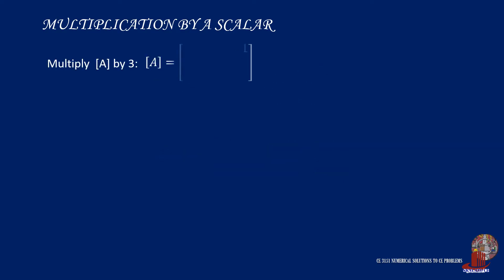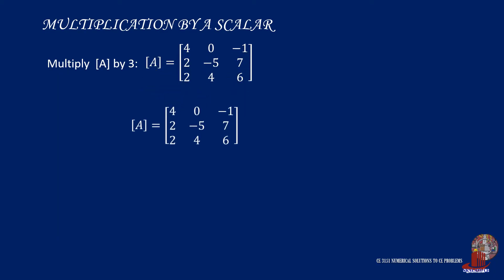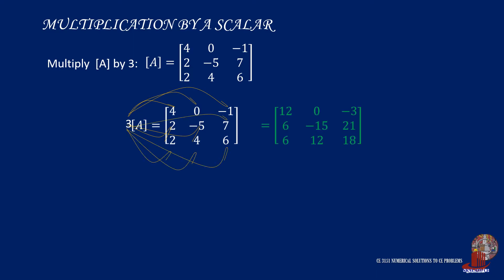An example is matrix A multiplied by 3, with the elements as shown. The constant 3 is multiplied to every entry, resulting in a matrix with 12, 0, and negative 3 for the first row, 6, negative 15, and 21 for the second row, and 6, 12, and 18 for the third.